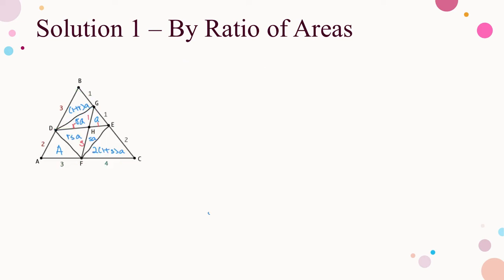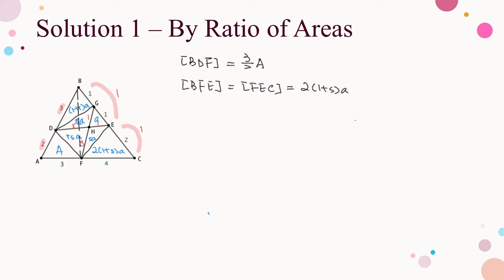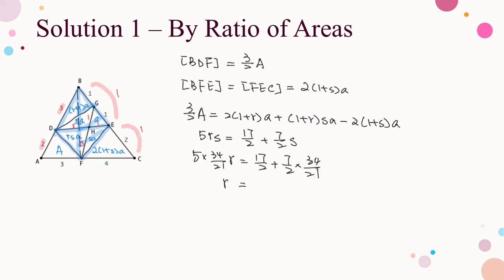Similarly, considering ratio AD to DB which is 2 to 3, area of BDF equals (3/2)A-prime. By ratio BE to EC which is 1 to 1, area of BFE equals area of FEC equals 2(1 + S) times A. Since area of BDF equals area of BDE plus area of DEF minus area of BFE, substituting and simplifying with the value of S, we get R equals 7 over 4. So the required ratios are DH to HE equals 7 to 4 and FH to HG equals 34 to 21.